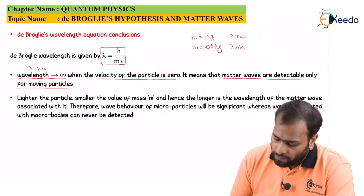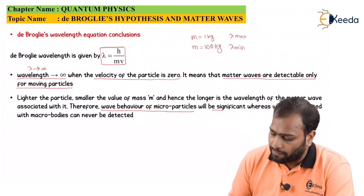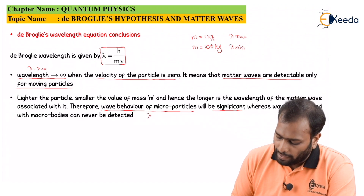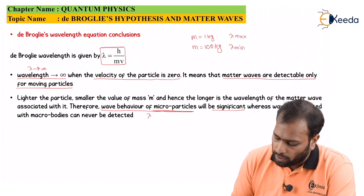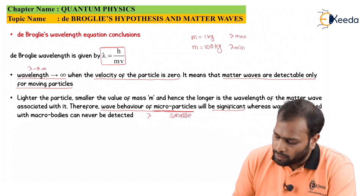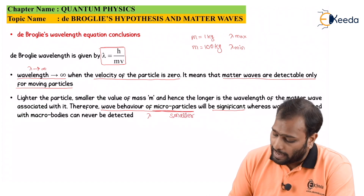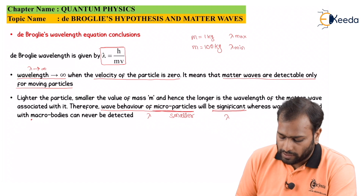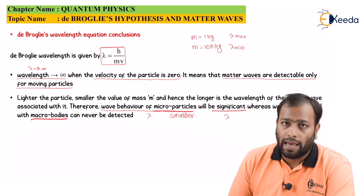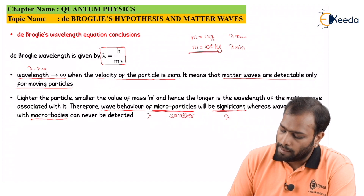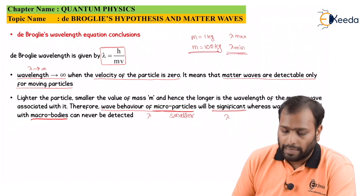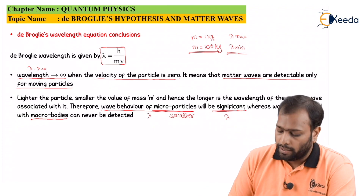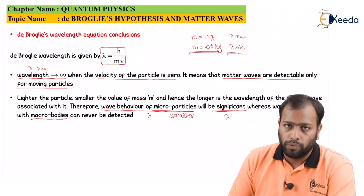The wave behavior of a microparticle will be significant. Microparticles — smaller or lighter particles — will have maximum λ. Whereas macro bodies, which are bodies with heavier mass, will have minimum λ. In cases where masses are even higher, waves are never detected, tending λ to equal zero.